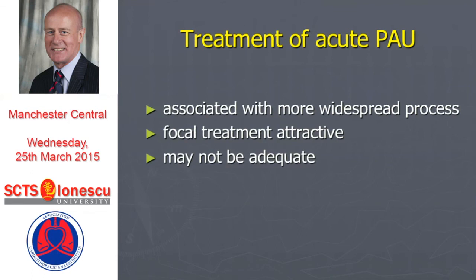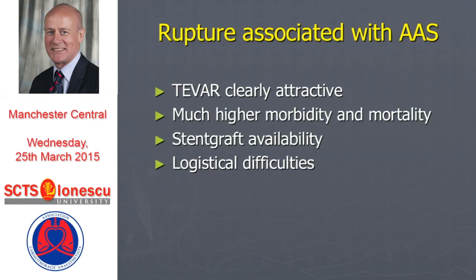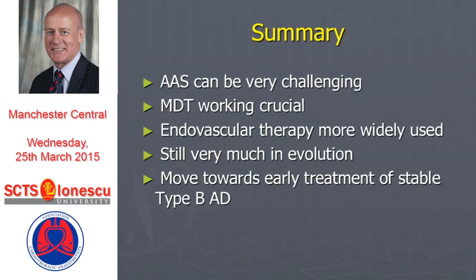Acute penetrating aortic ulcer is usually associated with a more widespread process — i.e. intramural hematoma. So focal treatment is attractive, but in those settings it may not be adequate. In rupture, TEVAR is attractive in these desperate situations but it's a very high-risk strategy, with immediate availability of stent grafts and associated logistical difficulties. These patients can be very challenging. The MDT working is both vital and rewarding in developing this field. Endovascular therapy has been more widely used and is still very much in evolution, as is our understanding of these conditions. We will probably see over the next five to ten years a move towards the early treatment of initially stable type B dissection. Thank you.